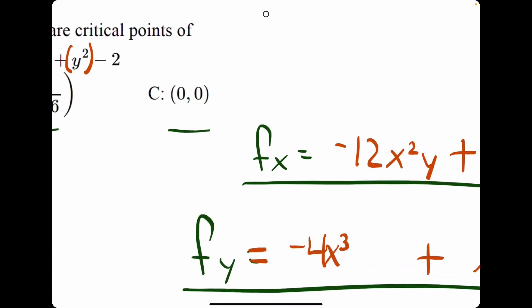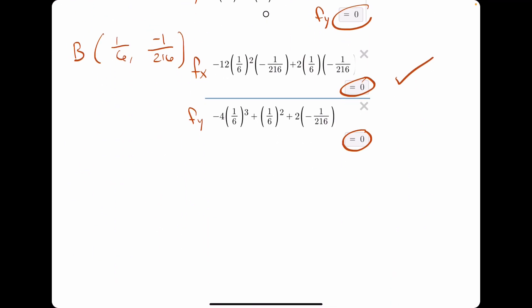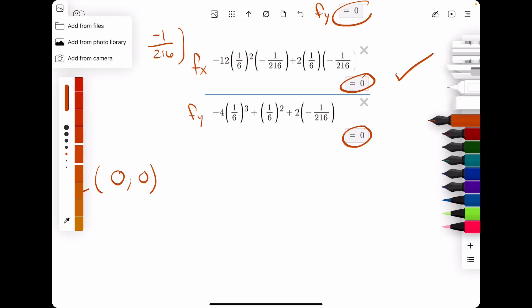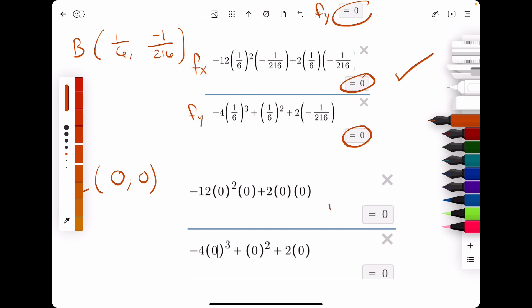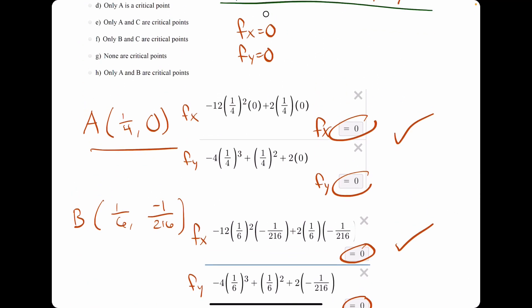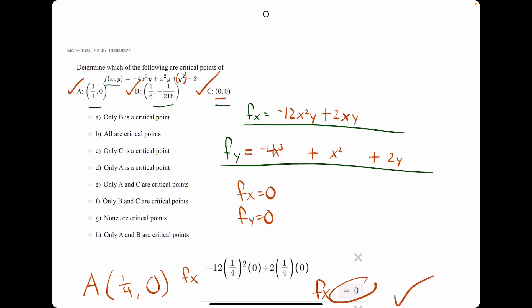It checks out, and then we could probably see without looking at the calculation, but plugging in 0, 0 to fx and fy would make everything equal to 0 in the end. We have fx equals 0, and fy equals 0. So, 0, 0 is also a critical point because it makes fx and fy equal to 0. So, it looks like all of these are critical points.